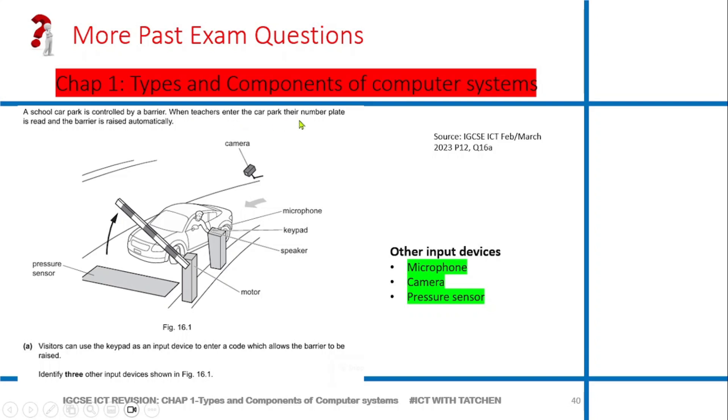When teachers enter the car park, their number plate is read and the barrier is raised automatically. Visitors can use the keypad as an input device to enter a code which allows the barrier to be raised. Identify three other input devices shown in the figure. This is a figure: pressure sensor - is it an input device? Motor - is it an input device? Speaker - is it an input device? Keypad is input, microphone, camera. Input devices you can pick: pressure sensor - when this car steps on this pressure sensor something happens, maybe it can enable opening of the bar. Microphone - input, camera - input. You have a number of input devices there to pick from. It's a very practical question.